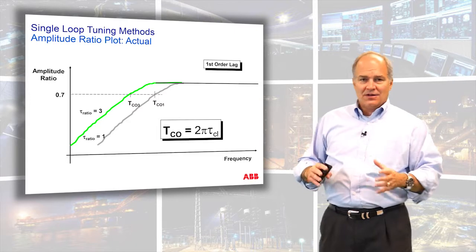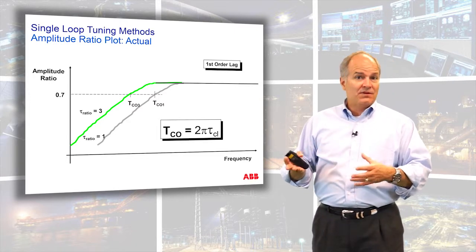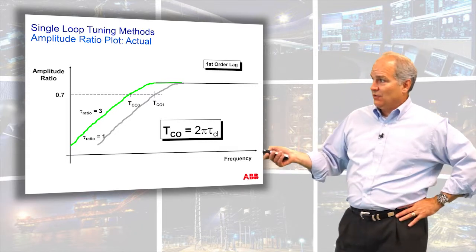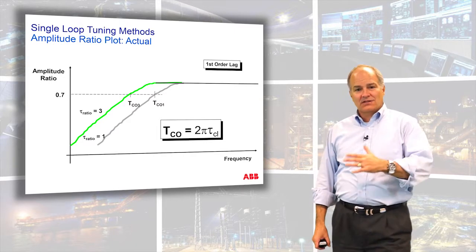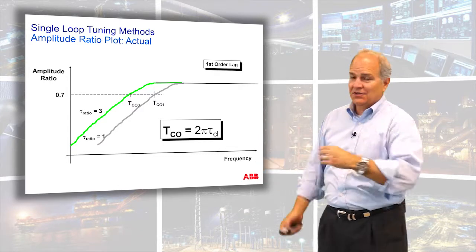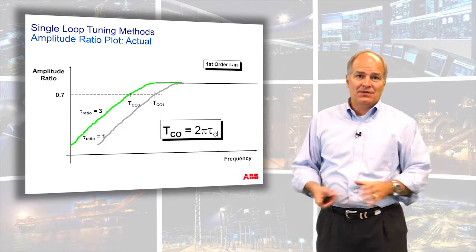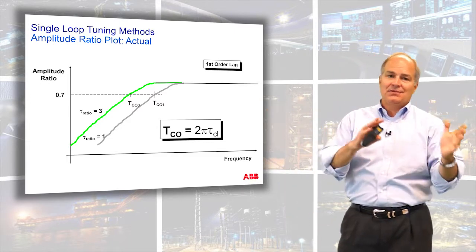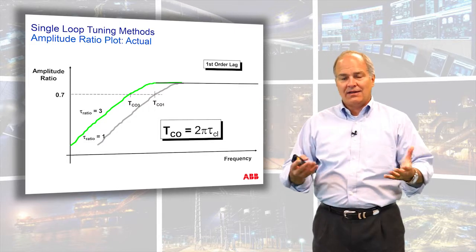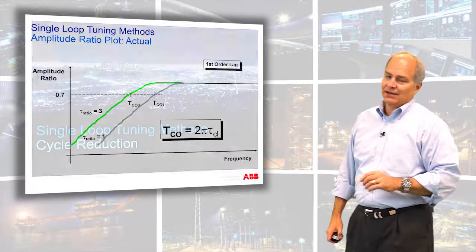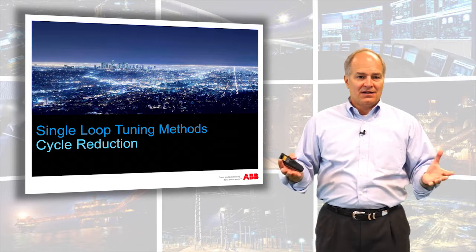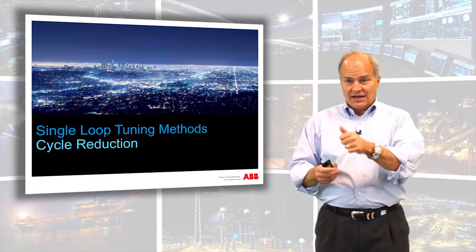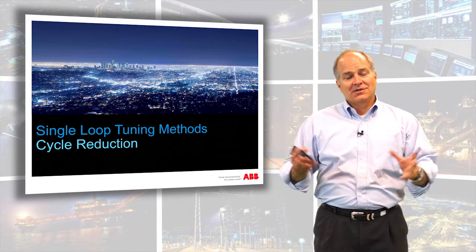I've used this several times to troubleshoot processes. When called in for an oscillating loop, I can say: flip it to manual — if the oscillation goes away, it's a control problem; if it's still there, it's a process problem, not control's fault. As you tune a loop slower and slower, the attenuation curve flattens out, eventually having zero ability to regulate. That's why we recommend tau ratios between one and a half and three. In this talk, we covered dealing with cycles and oscillations: 2π times the closed loop time constant gives you the cutoff period — disturbances slower than that are attenuated; faster ones pass through.